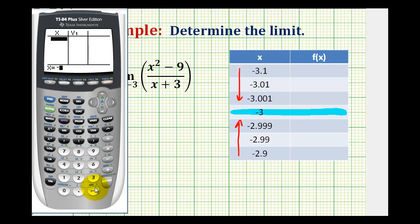So we have negative 3.1, negative 3.01, and negative 3.001. Let's go ahead and type in negative three. Of course we're going to get an error because we would have a zero in our denominator.